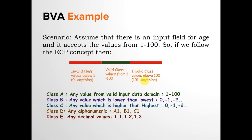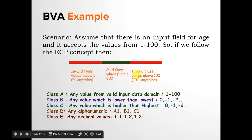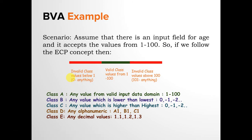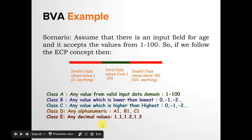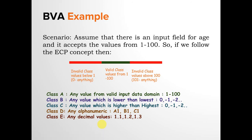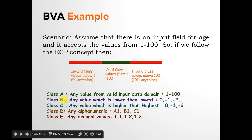These invalid classes represent negative testing. There will be three main classes based on the valid data domain. You can also create additional classes for alphanumeric values — it doesn't matter whether you test with 'a1', 'z1', or 'c1', the result will be the same. Similarly for decimal values, whether you input 1.1 or 100.1 the result is the same. This is how you divide input data into equivalence classes and pick at least one data point from each.